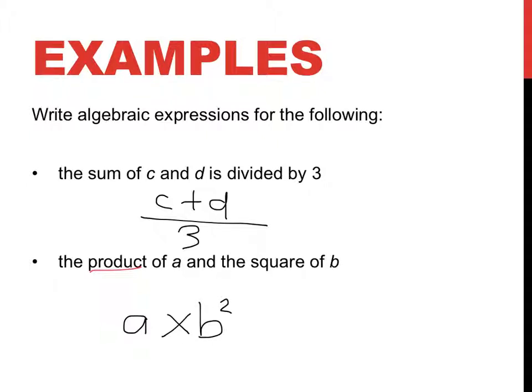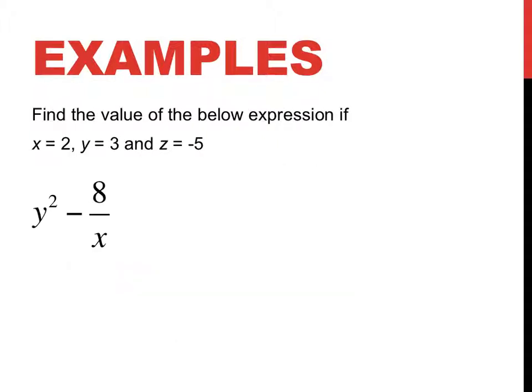The product of a and b squared. So, now I know I don't write it with the times in there. So, instead of a times b squared, I just write ab squared.